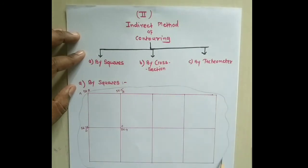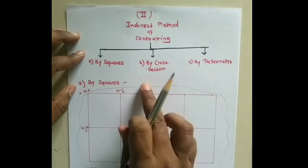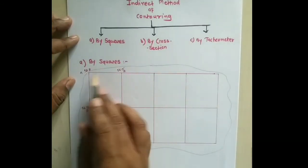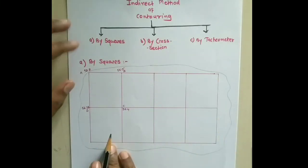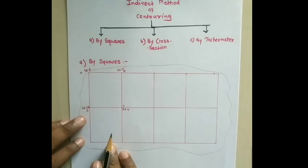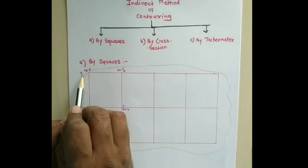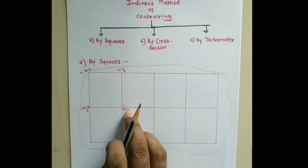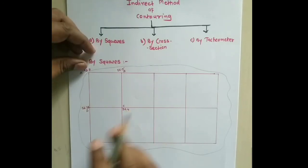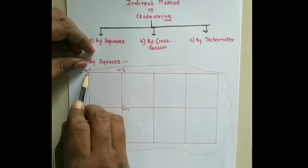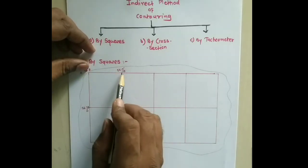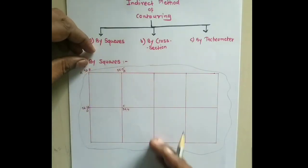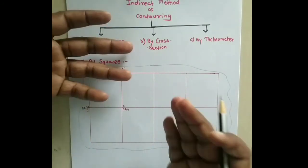In the by-squares method, the total area is divided into squares of a particular size. If there are points A, B, C, D, we select 4 corner points. For example, the reduced levels at these points are 58.8, 56.5, 56.38, and 56.4 meters.